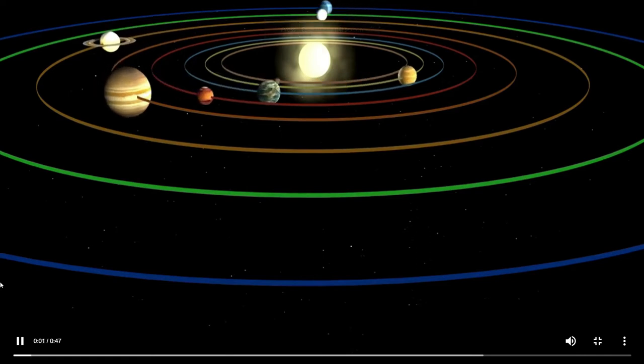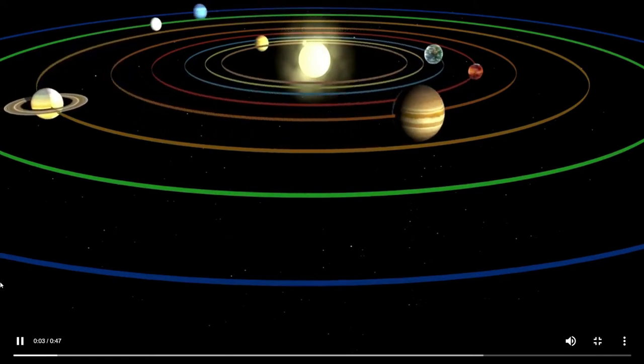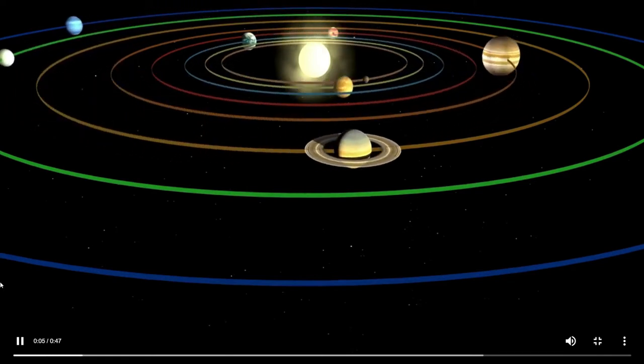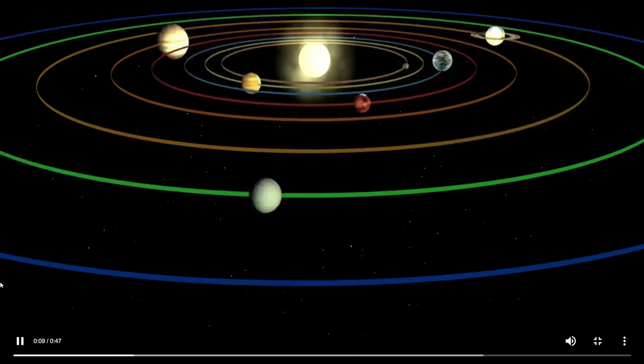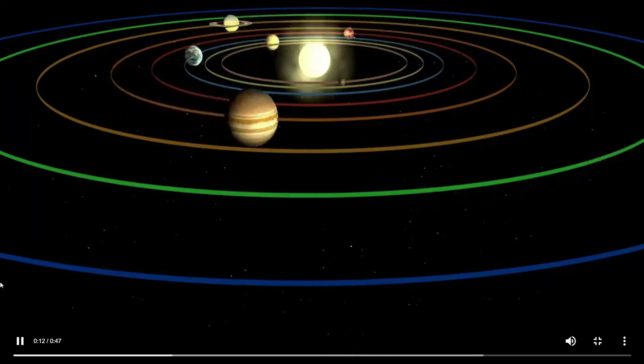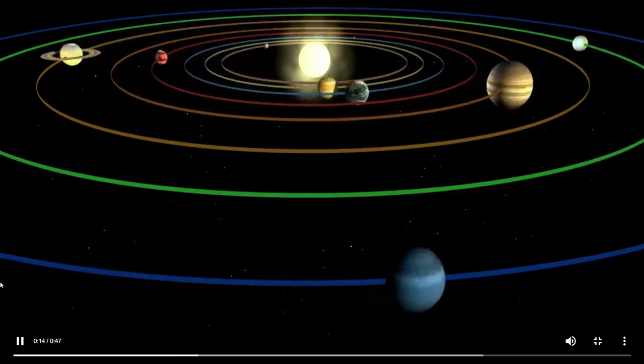Our solar system consists of the sun, eight planets, satellites, and other celestial bodies like asteroids and meteoroids.